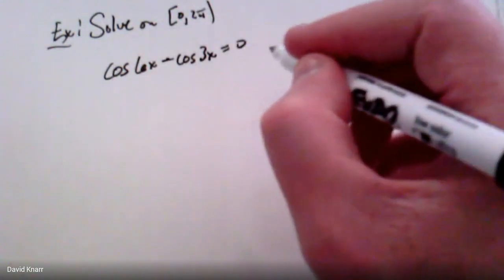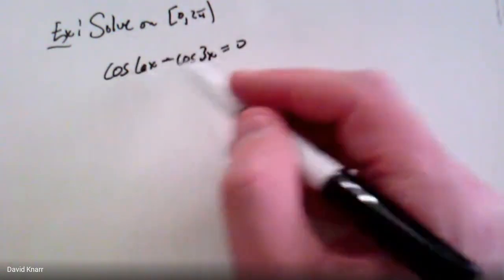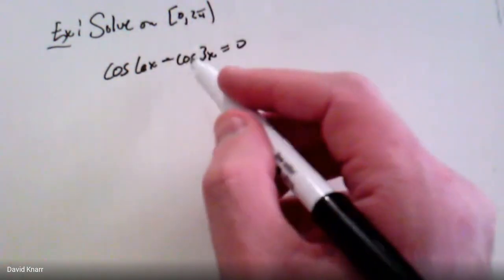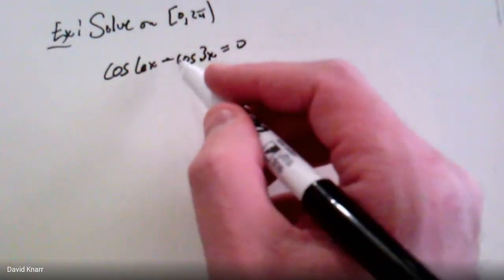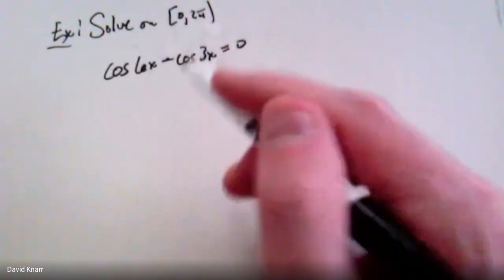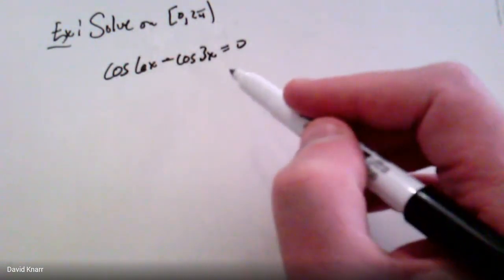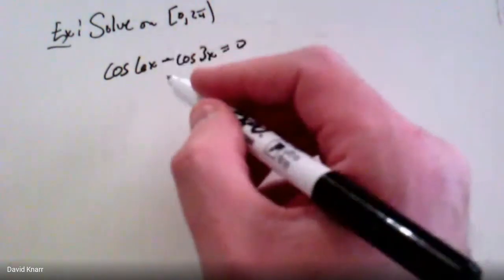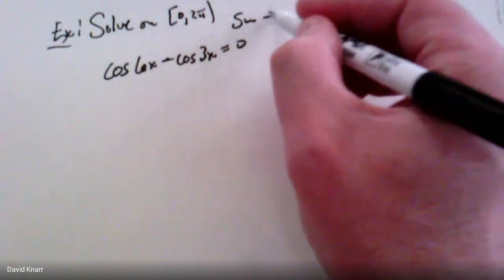Let's try one more: solve cos(6x) − cos(3x) = 0 on the interval [0, 2π]. We can't factor anything out since the arguments are different. However, the sum-to-product formulas let us convert this difference into a product, and if a product equals zero we can split it and solve each factor separately — a huge advantage.